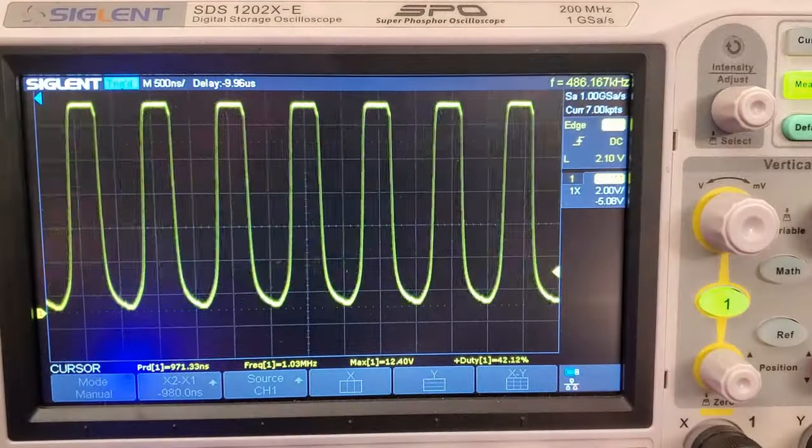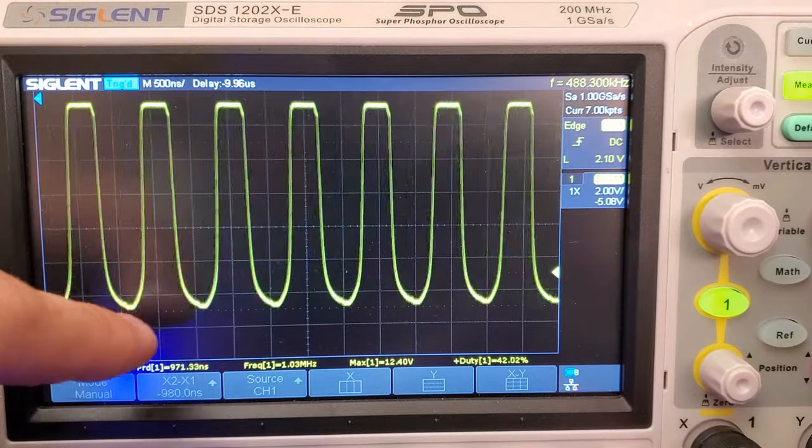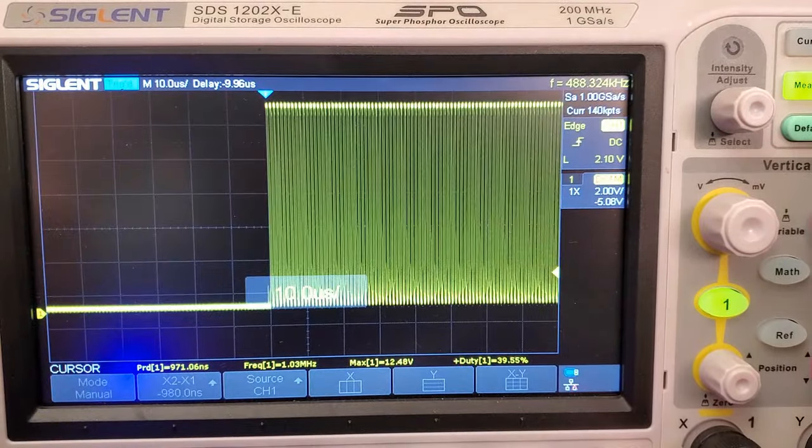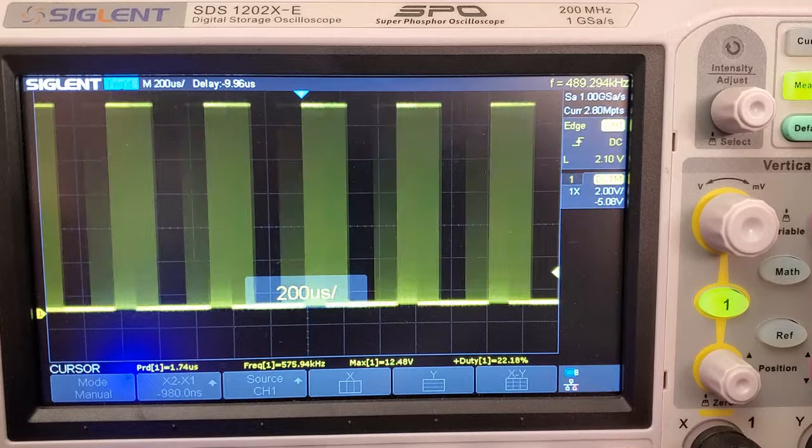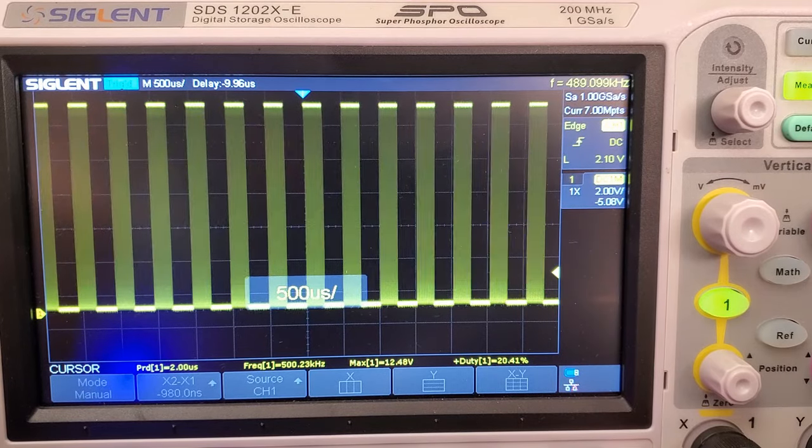Now for a look on the scope. We can see our 1 megahertz carrier wave on the amplifier, but if I zoom out, I can also see the modulation, which is basically just keying the carrier wave on and off a thousand times per second.